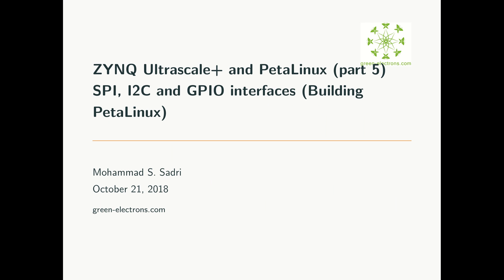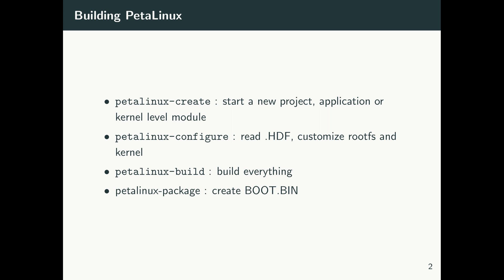Welcome to part 5 of the videos under the title Zynq UltraScale+ and PetaLinux. In these recent videos I'm trying to show how one can communicate with SPI, I2C, and GPIO interfaces inside the PL and also the PS — the ideas will be very similar within PetaLinux. In the previous video I showed you the Vivado designs we have for the ZCU102 and for the Z-turn board.